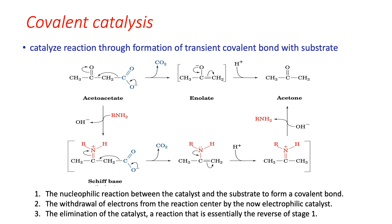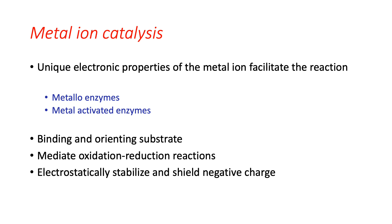Metal ion catalysis: about one third of known enzymes require metal ions for their catalytic activity. Based on ion-protein interaction, metal ion catalysis is classified into two types: metalloenzymes, which contain tightly bound metal ions — mostly transition metal ions like iron, copper, and zinc — and metal-activated enzymes, which have loosely bound metal ions from solution, usually alkali and alkaline earth metals like sodium, potassium, calcium, and magnesium.